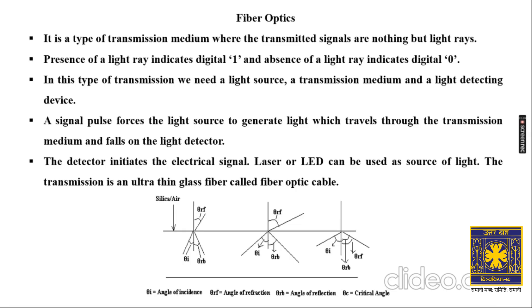If light refracts out, you lose information. To prevent this, you keep increasing the angle of incidence (theta-i). As theta-i increases, the angle of refraction also increases, until a point is reached where the angle of refraction becomes 0 and all the light — all the information — is reflected back into the optical fiber cable. This condition is called total internal reflection.